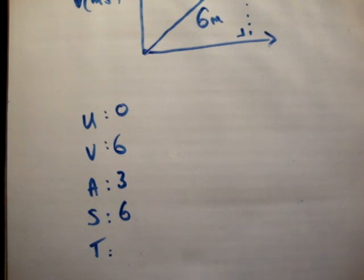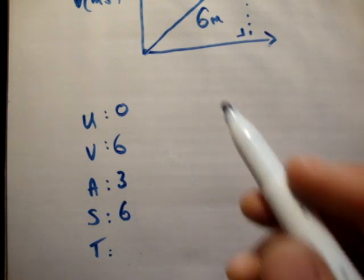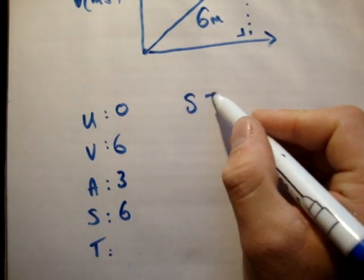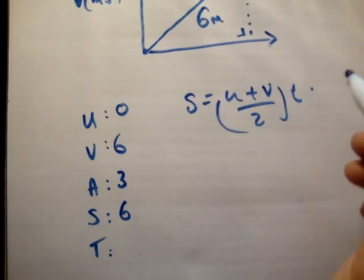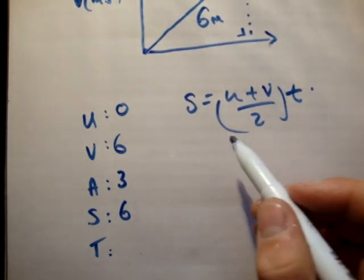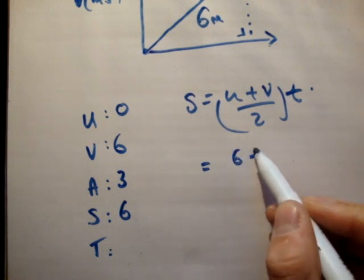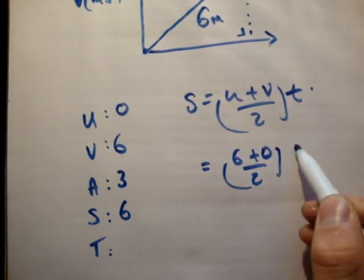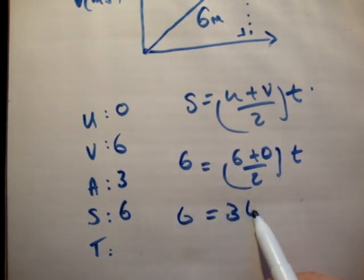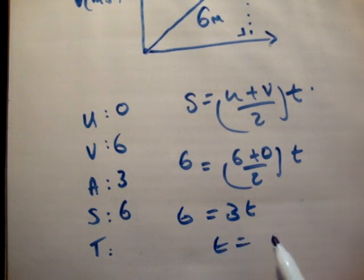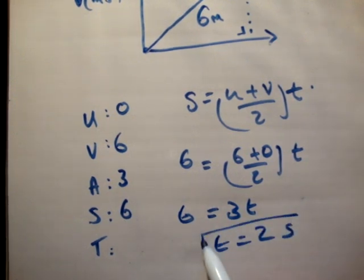s equals (u plus v) over 2, times t. That works because it contains t. So: 6 equals (0 plus 6) over 2, times t, which gives 6 equals 3t. Therefore t equals 2 seconds.